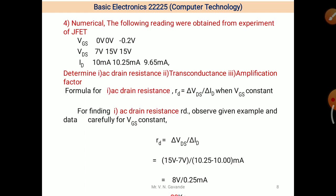Next equation, the following reading were obtained from the experiment of JFET. VGS, there are three columns: VGS, VDS, and ID. When VGS is 0, VDS is 7 volts and ID is 100 milli Ampere. When next VGS kept constant 0 volt, but VDS changed to 15 volts, and what happens? ID changes to 10.25. And again, now VGS changed from 0 to minus 0.2 volts.